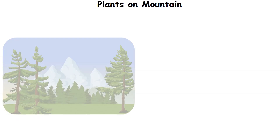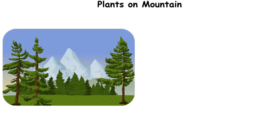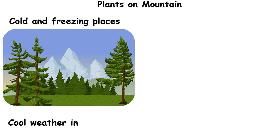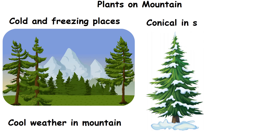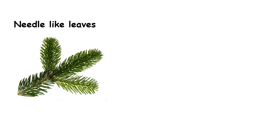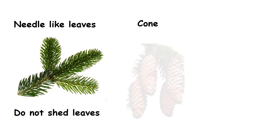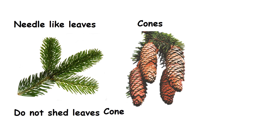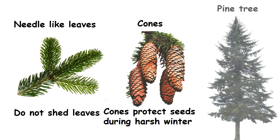Plants on mountain. These plants grow in cold and freezing places and adapt to cold weather in the mountain. Trees are conical in shape — this shape allows snow to slide from the trees easily. Needle-like leaves help them to survive in cold conditions like snow. These trees do not shed leaves. They have cones instead of flowers. These cones protect the seeds during harsh winter. Example: pine tree.